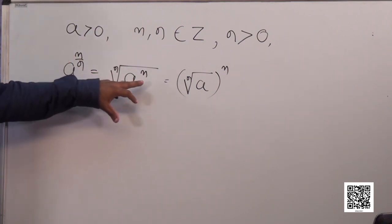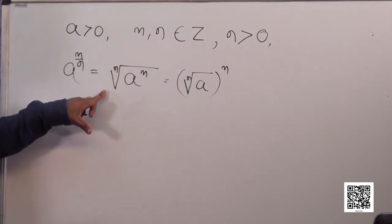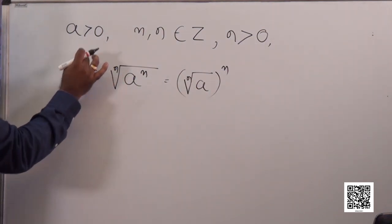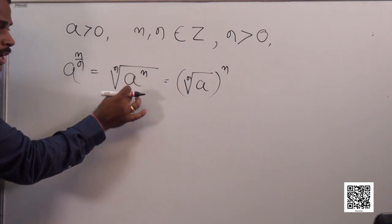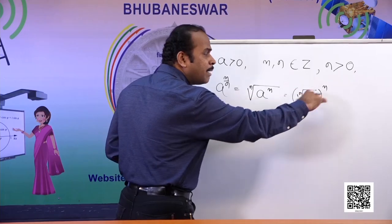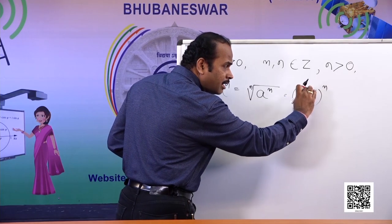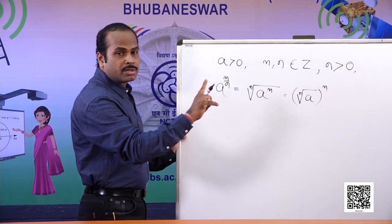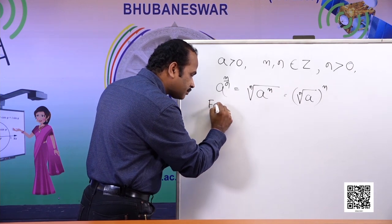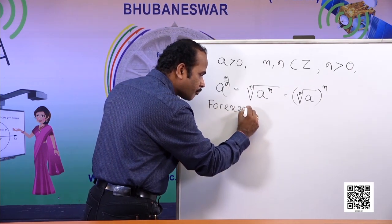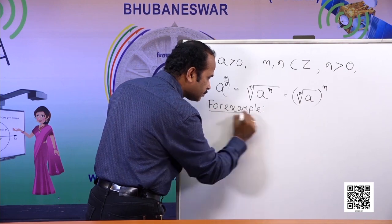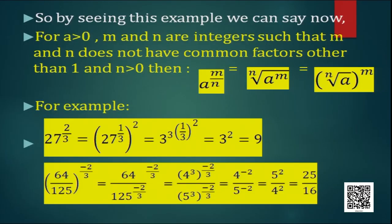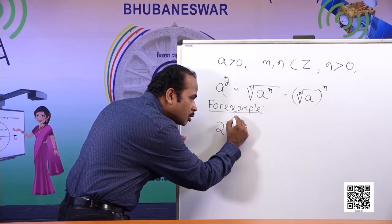So a to the power m by n equals the nth root of a to the power m, or the nth root of a, whole to the power m — either way gives the same value. For example, let us find 27 to the power 2 by 3.